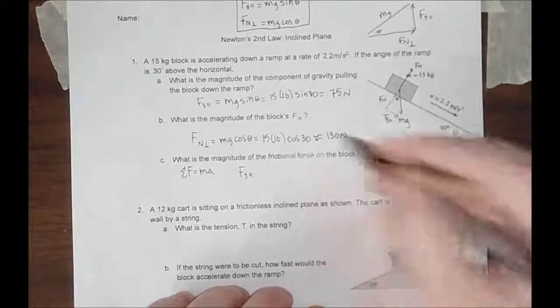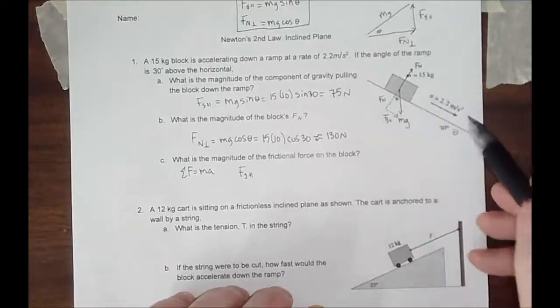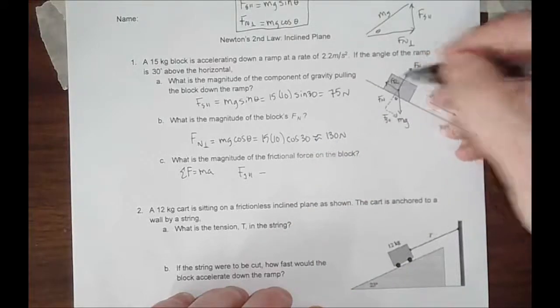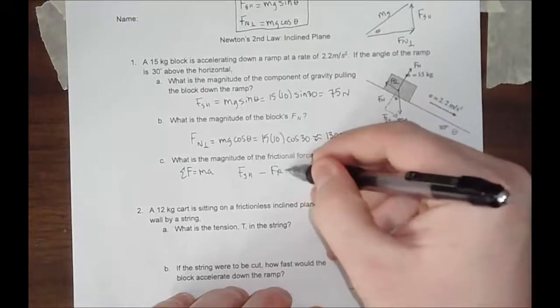I'm going to put FG parallel and it's pulling in the positive direction. The block is moving in motion. Minus, there is some frictional force pulling back. Equals MA.